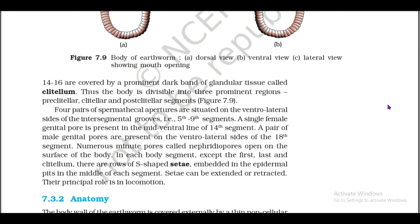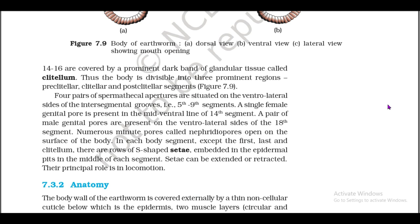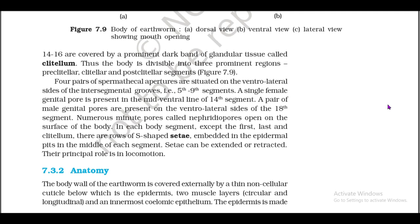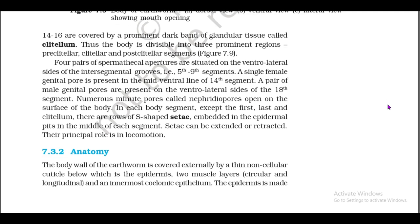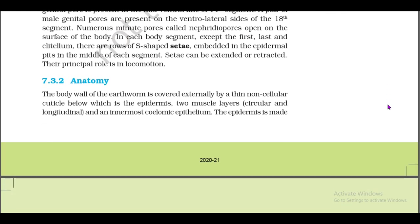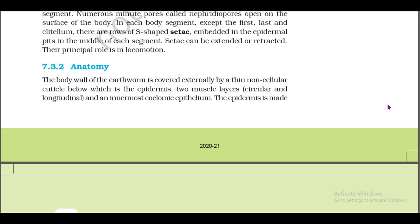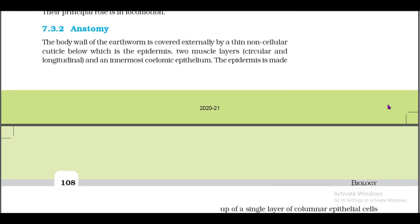Four pairs of spermathecal apertures are situated on the ventrolateral sides of intersegmental grooves of the fifth to ninth segments. A single female genital pore is present in the mid-ventral line of the fourteenth segment. A pair of male genital pores are present on the ventrolateral sides of the eighteenth segment. Numerous minute pores called nephridiopores open on the surface of the body. In each body segment except the first, last, and clitellum, there are rows of S-shaped setae embedded in epidermal pits in the middle of each segment. Setae can be extended or retracted; their principal role is in locomotion. 7.3.2: Anatomy.